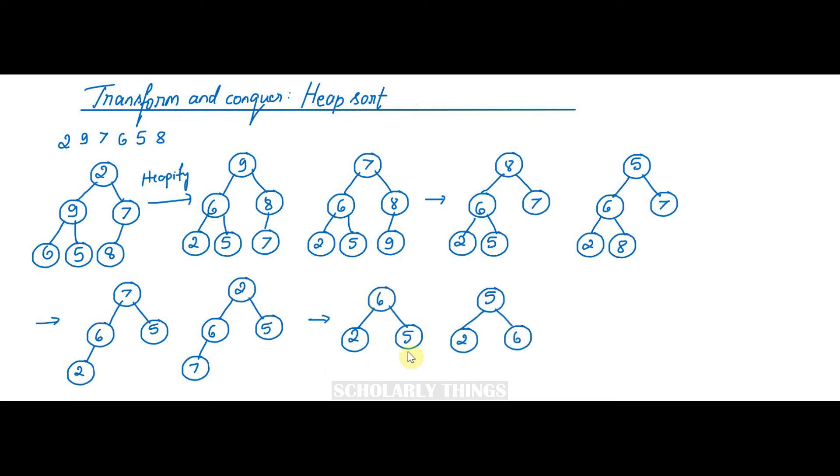Consider the root node and the last element and then swap them. So 5 goes here, 6 goes here, and then you delete 6. So now the tree looks like this: 5, 2. Now exchange 5 and 2. 2 goes here, 5 goes here, and delete 5.